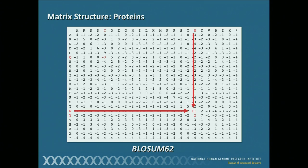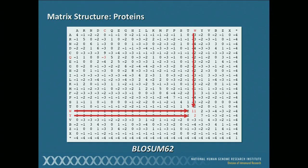Let's say instead of that tryptophan lining up with another tryptophan, the tryptophan lines up with a tyrosine — a W with a Y. If we look at the intersection of those two, we see a value of plus two. This takes into account the fact that these two can and often are observed to substitute for one another in proteins, but it's not an exact match. So we can't give it as many points as for an exact match; instead, we give it a lower score, but it's still a positive score. In the third case, a total mismatch — something like cysteine for glutamine — you see a negative value, a minus three, because these two residues do not normally substitute for one another.